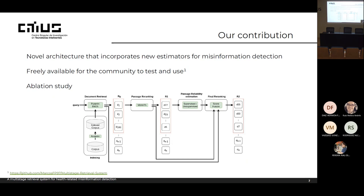We want to increase the compatibility with the helpful ones and decrease the compatibility with the harmful ones. We presented a novel architecture that incorporates a new estimator for misinformation detection. We defined a high-level architecture, and this system is freely available for the community on GitHub. We also performed an ablation study to test which stages of this architecture are most important in the final misinformation prediction.